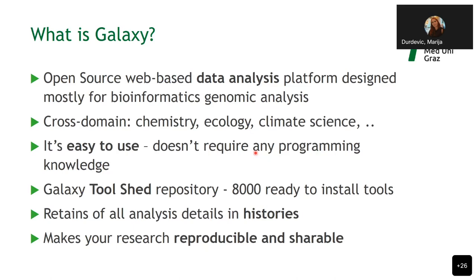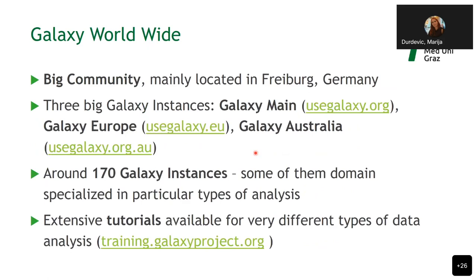You can share your work inside Galaxy to specific users, or to a certain group of people. The Galaxy community is mainly located in Freiburg, Germany. Even though the initiative started in the United States, the community grew in Europe and they maintain three major Galaxy instances: main Galaxy at usegalaxy.org, Galaxy Europe, and Galaxy Australia. There are also more than 170 Galaxy instances all around the world.